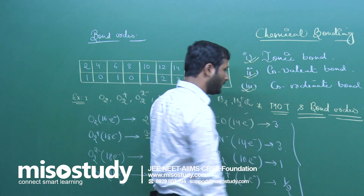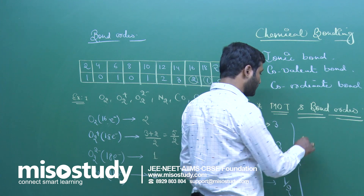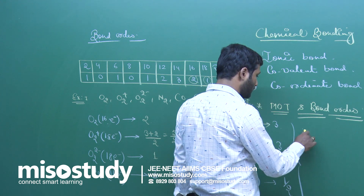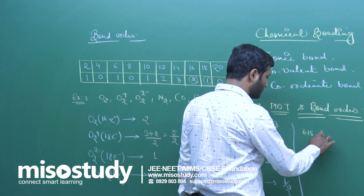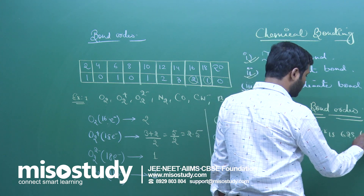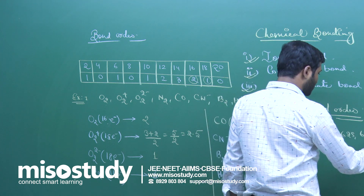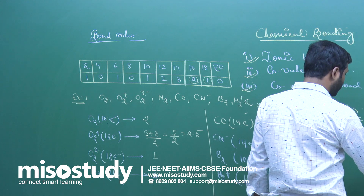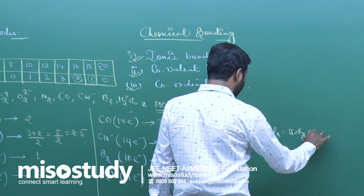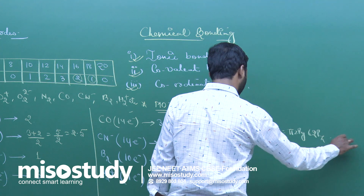By using MOT, how to write the electronic configuration? We know the order is: σ1s, σ*1s, σ2s, σ*2s, then π2px, then π2py, σ2pz, and so on.